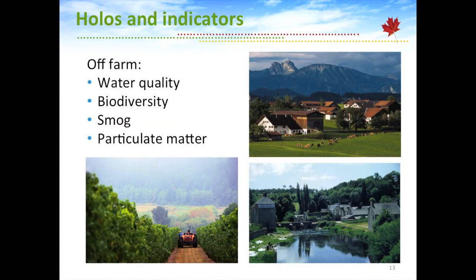In the longer run, we want to move to off-farm indicators — things that happen off the farm, such as water quality, biodiversity, and smog. This is a calculation where you have to estimate how the farm interacts with the environment, and therefore you need to know what elements of the environment are close to the farm. If a farm is very far away from a city, it is unlikely to contribute to smog in the city, but if it's right beside the city there's a higher likelihood. So we'll somehow have to combine the model with a georeferencing system — that's something to think about later.